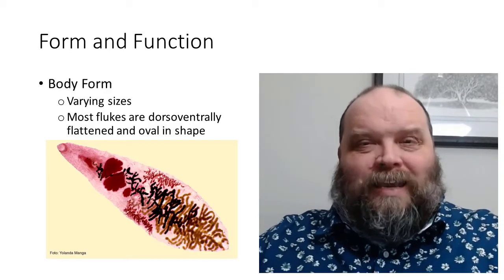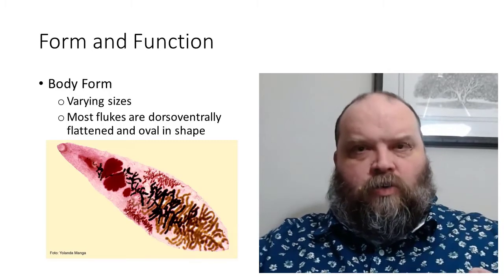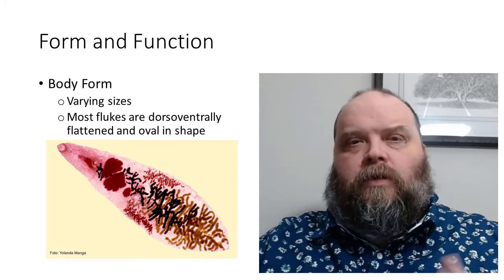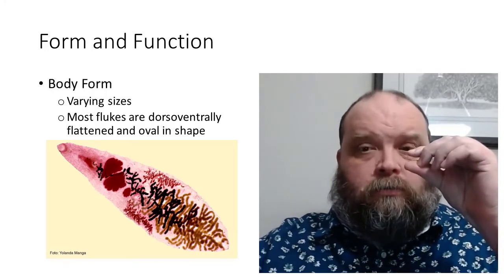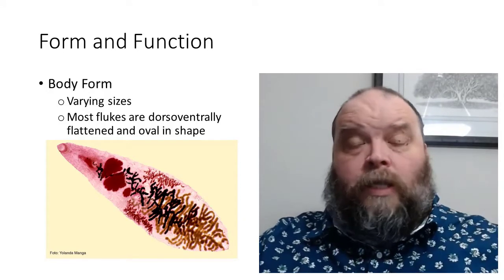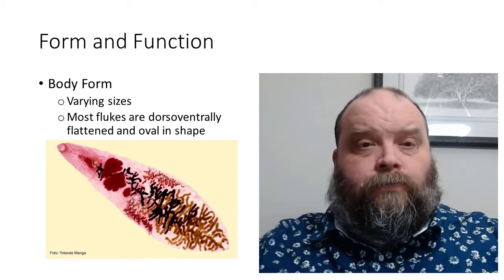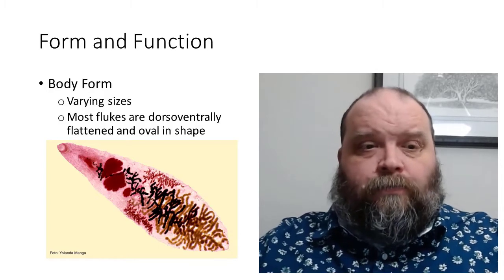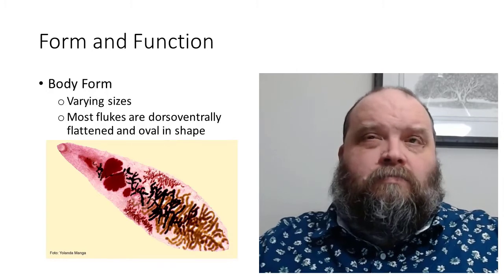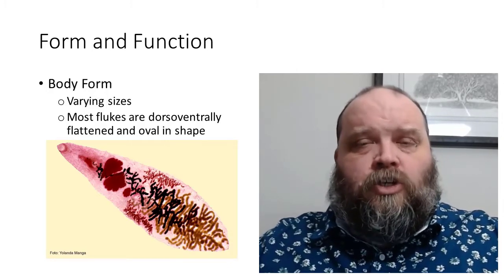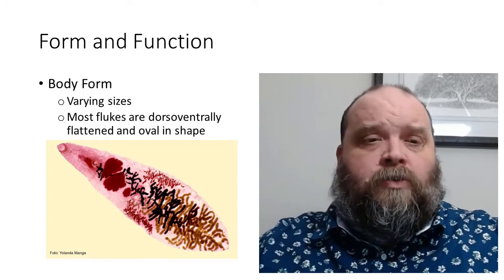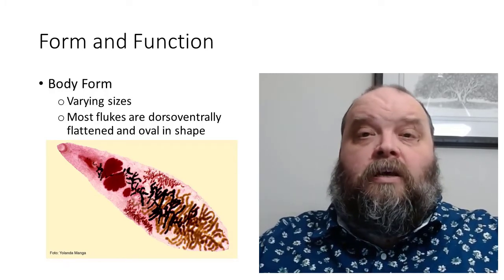When you look at the overall body form of the general Trematoda, they are varying in size, some quite small, barely able to see without a magnifying glass, some can be quite large. It's all relative. What you're going to see, though, is there is a roughly set generalized shape to all the Trematodes, or what we also commonly refer to as the Flukes.